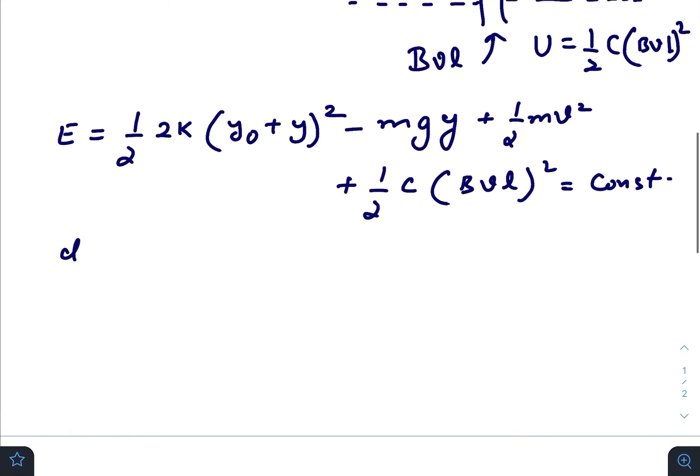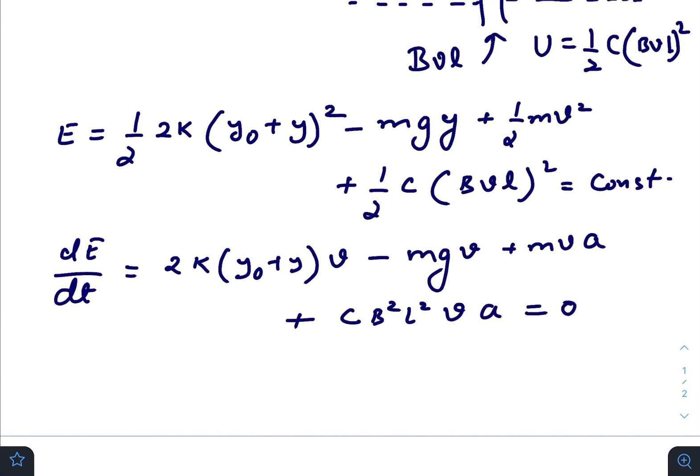If you differentiate this whole energy with respect to time, we will get 2k(y_naught plus y) times dy/dt, which is the velocity, minus mg dy/dt, that is v, plus m v dv/dt, which is the acceleration, plus C B squared L squared v dv/dt, again the acceleration, equals zero.